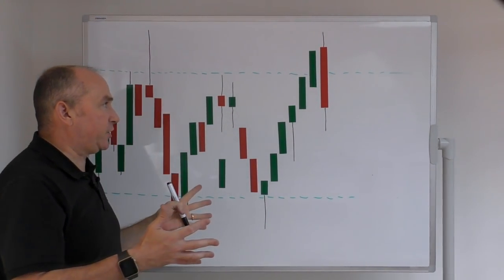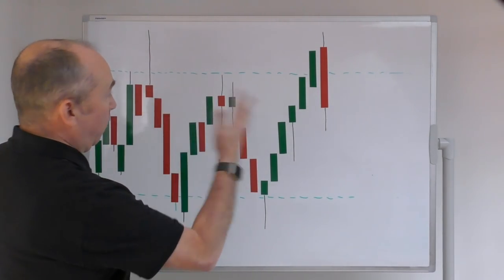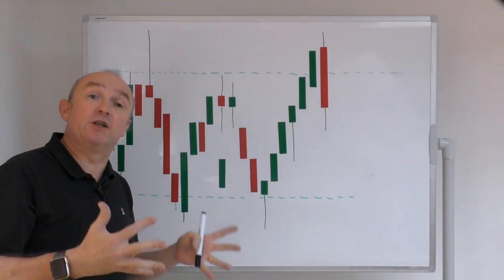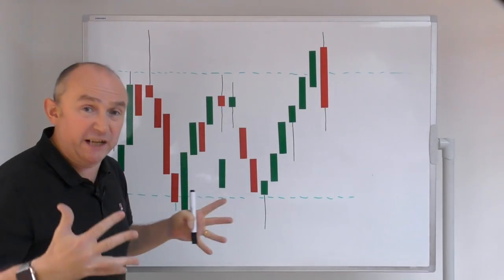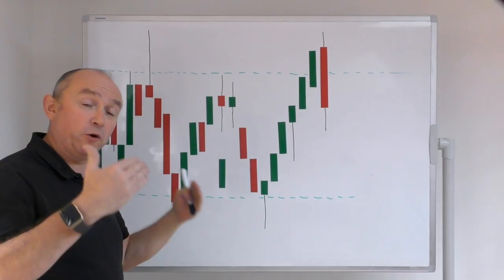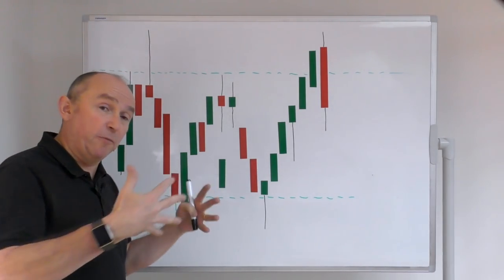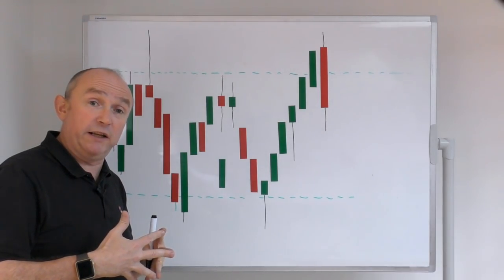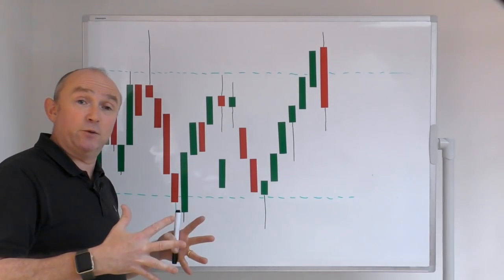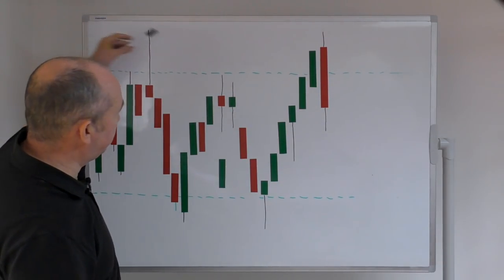Here we see a collection of candles on the whiteboard. I want to show you the patterns, where they are significant and where they work. Of course, you need to go onto a real price chart and look for these patterns at key levels of support and resistance yourself. Straight off this whiteboard demonstration, I'll jump onto the screens and show you an example on the Australian dollar against the US dollar on the four-hour chart, which is actually working quite well as we speak.